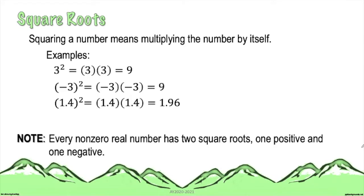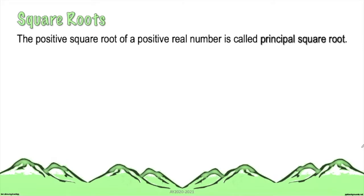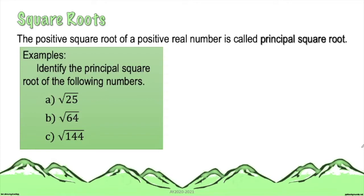Please take note, every non-zero real number has two square roots, one positive and one negative. The positive square root is what you call the principal square root.